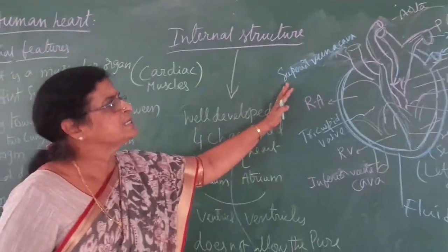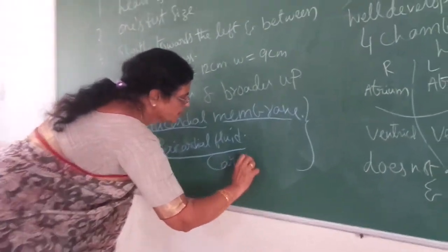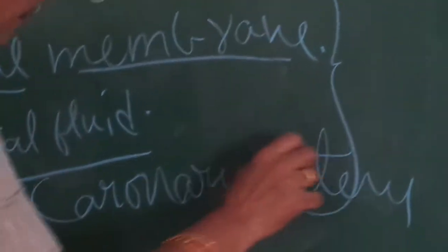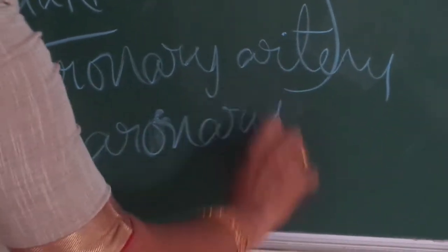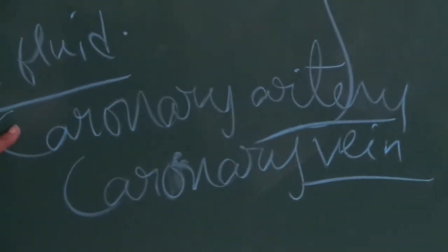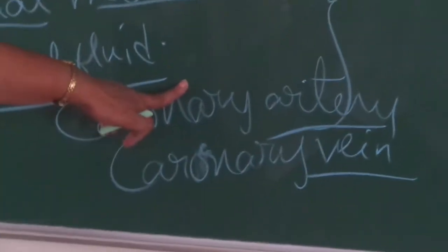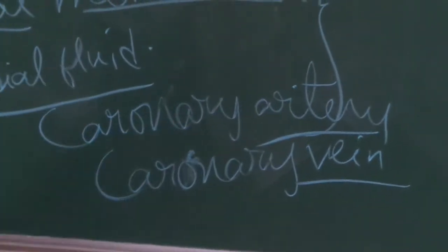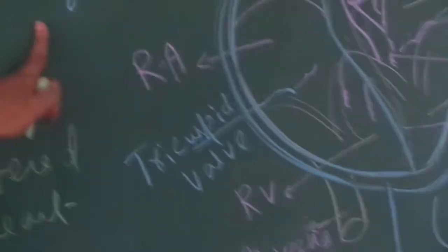The heart also requires blood. The blood vessels supplying blood to the heart muscles are called coronary arteries, and they take back the impure blood via coronary veins. The blood vessels supplying and collecting blood from the heart muscles — the cardiac muscles — are the coronary vessels. The membrane is the pericardial membrane, and the fluid is the pericardial fluid. The terminology is very important — please remember every term carefully.